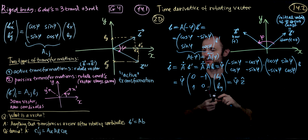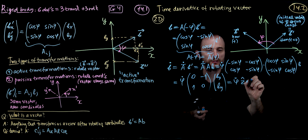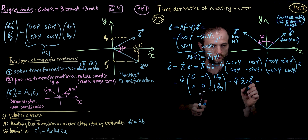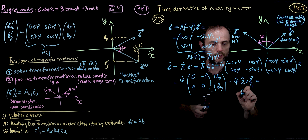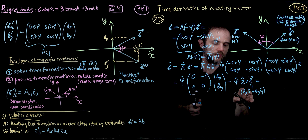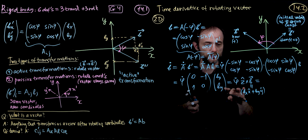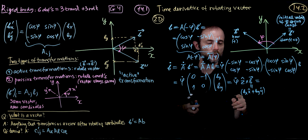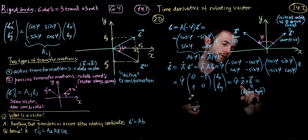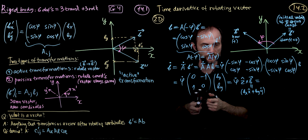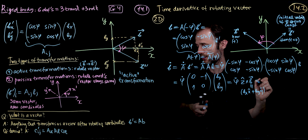What is A-tilde dot? A-tilde dot is this matrix differentiated, multiplied by phi dot. The differentiated matrix is: minus sine, minus cosine, cosine, minus sine — all times phi dot. That will be multiplied by A, which is: cosine phi, sine phi, minus sine phi, cosine phi — all multiplied by B.